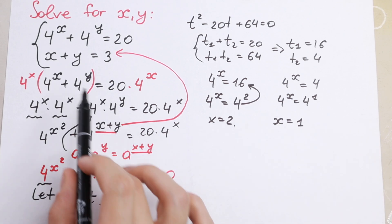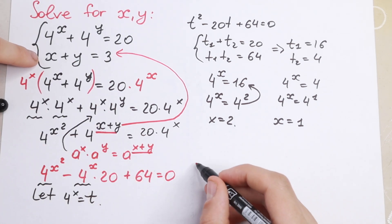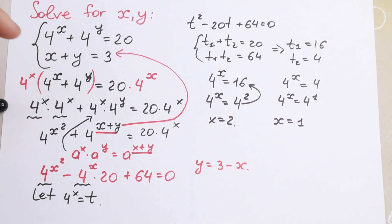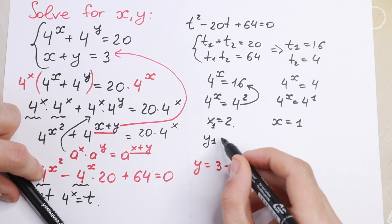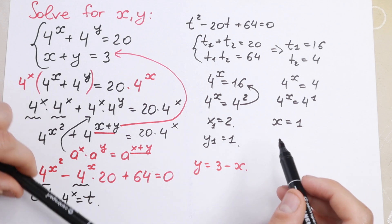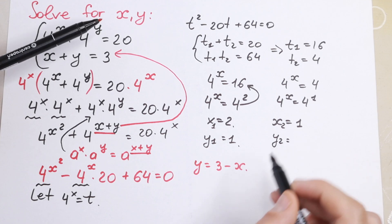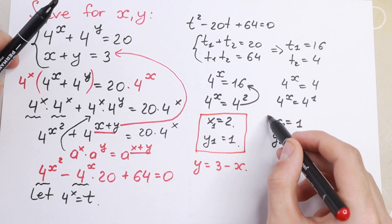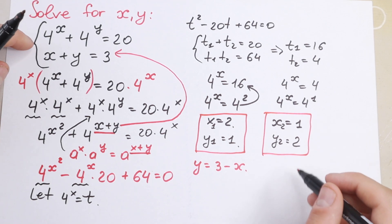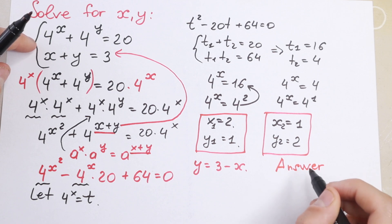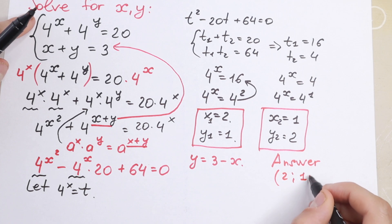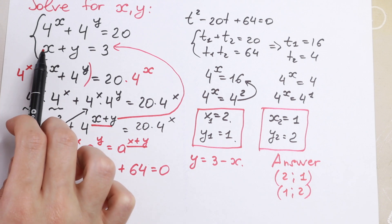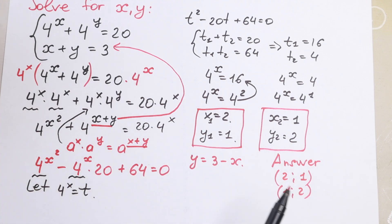We still need to find y. From the second equation, y equals 3 minus x. Plugging in x equals 2 gives y equals 1, and plugging in x equals 1 gives y equals 2. So we have two pairs of solutions: (2, 1) and (1, 2). We can verify: 2 plus 1 equals 3, and 4 squared plus 4 to the first equals 16 plus 4 equals 20. Both pairs satisfy the system.